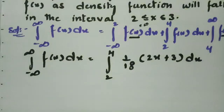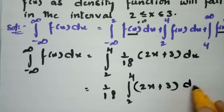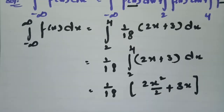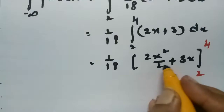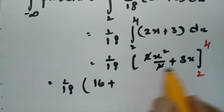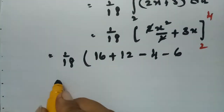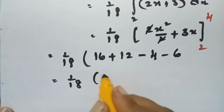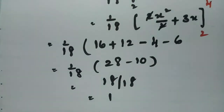Taking 1/18 outside, we integrate 2x + 3 from 2 to 4, giving (1/18)[x² + 3x] evaluated between 2 and 4. Substituting the upper limit 4: 4² = 16, and 3×4 = 12, giving 28. For the lower limit 2: x² = 4, and 3×2 = 6, giving 10. So we get (1/18)(28 − 10) = (1/18)(18) = 1.